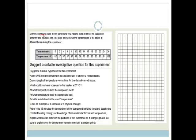It says TB and Mpumi place a solid compound on a heating plate and heat the substance uniformly at a constant rate. The table below shows the temperature of the object at different times during the experiment. They've got the time from 0 to 26 and temperature going from 15.5 to 102 degrees.